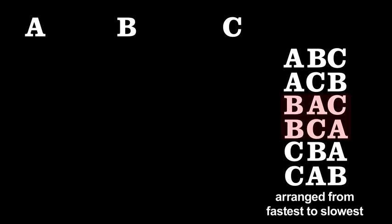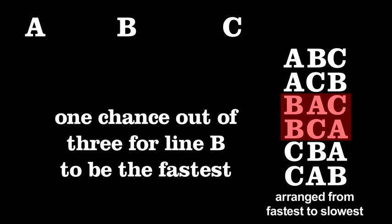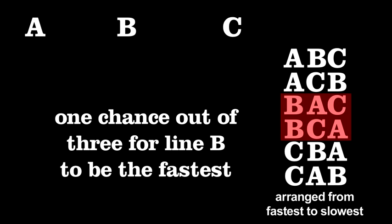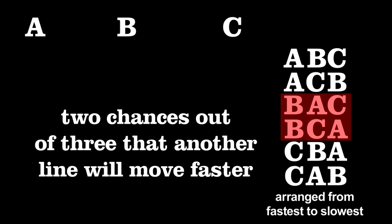Now, look at your line. Only twice out of six permutations did it come out in front. Thus, there's only one chance in three that it will be moving faster, and greater odds, two out of three, that one of the other lines will breeze past you.